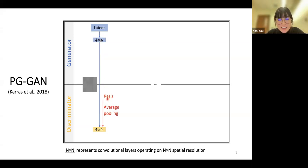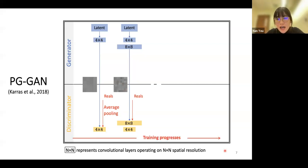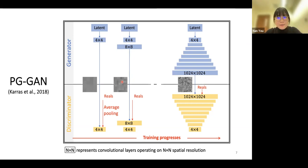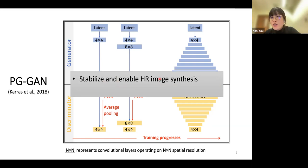After the training loss stabilizes, convolutional layers operating on 8×8 spatial resolution are added to the generator and discriminator at the same time to increase the resolution to 8×8. As training goes on, more layers operating on increasingly larger spatial resolution are added progressively. The resolution increases to 1024×1024 at last. This training scheme stabilizes and enables the synthesis of high resolution images, and also speeds up training because most iterations are done at lower resolutions.